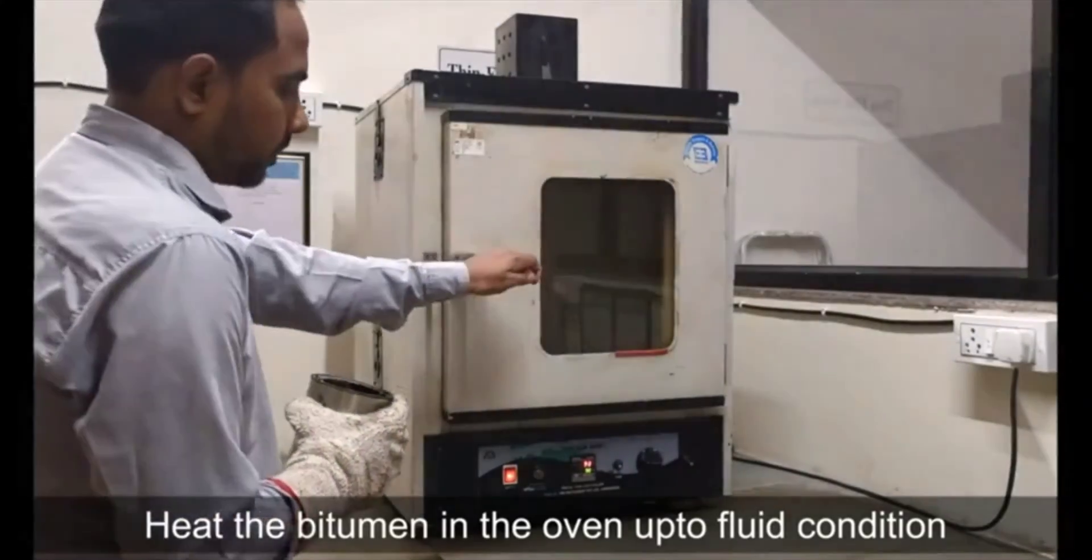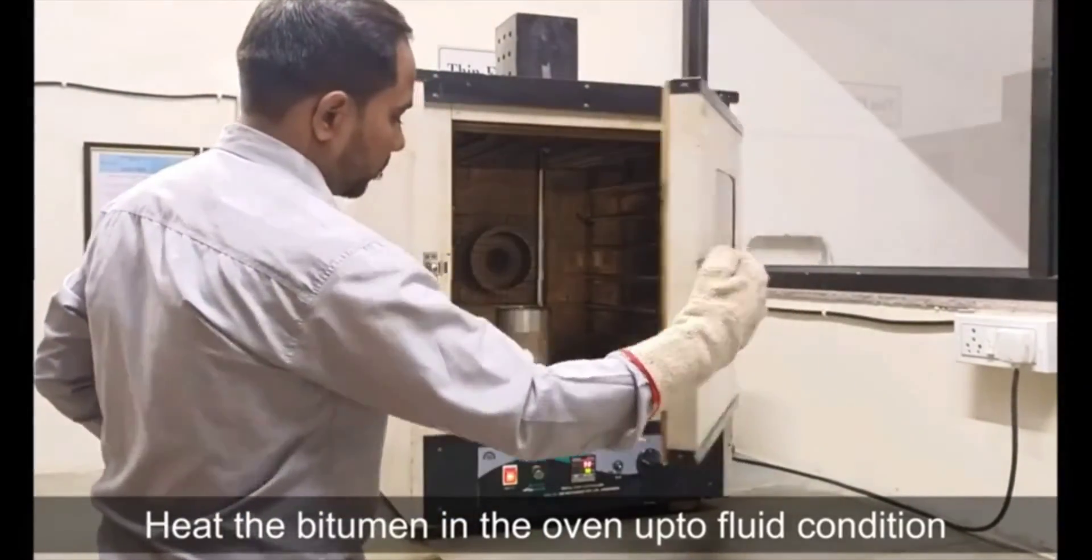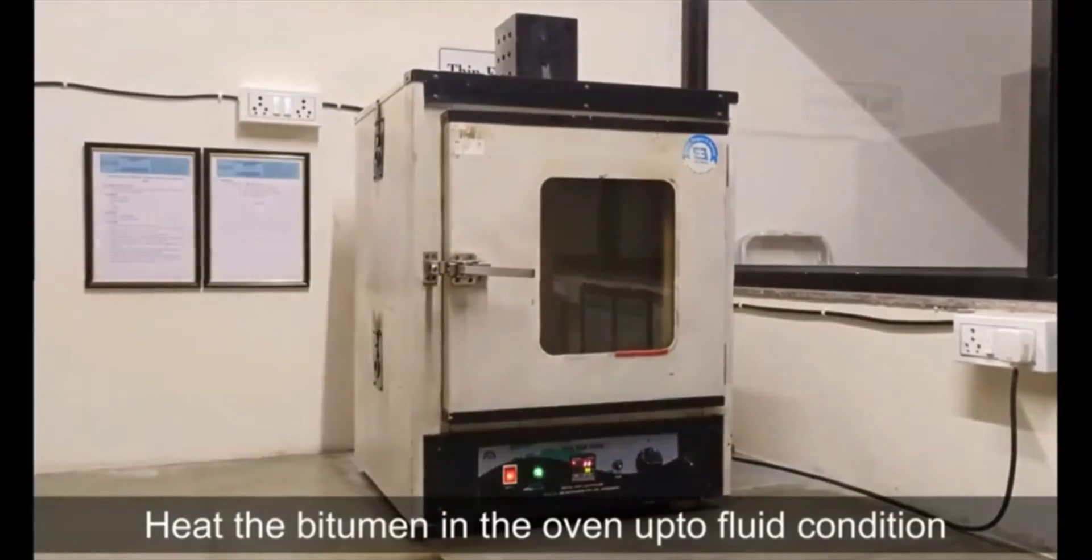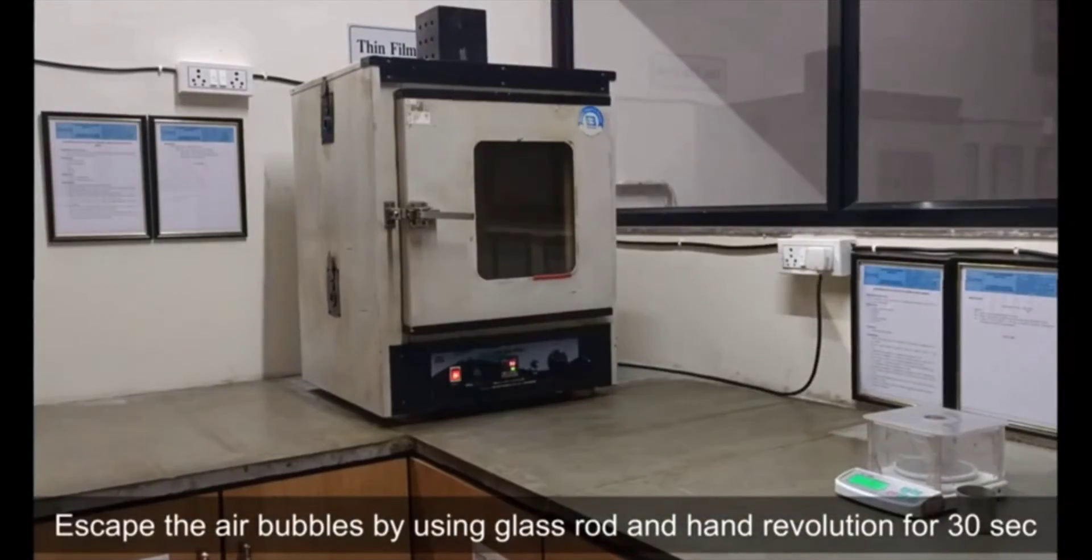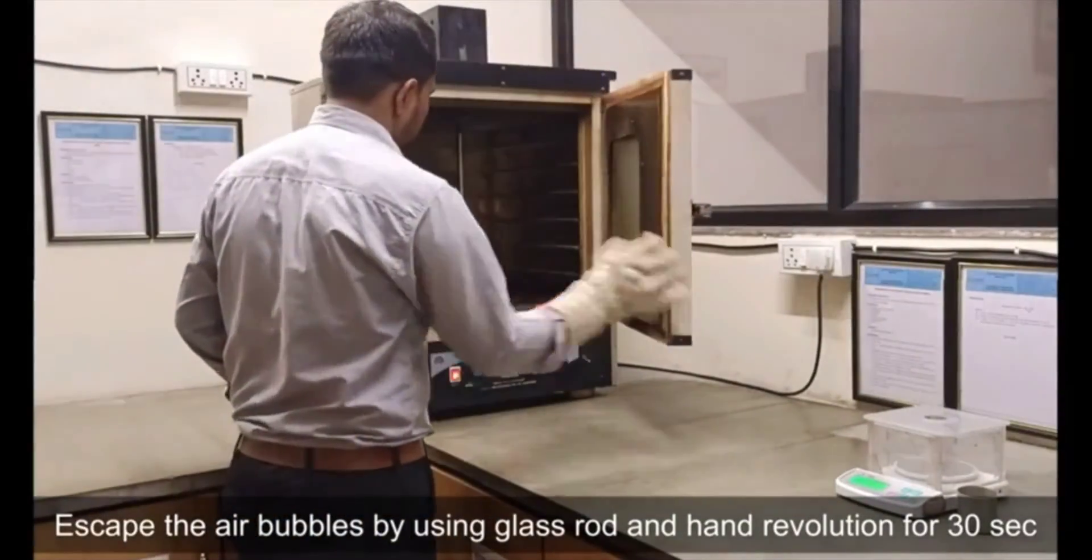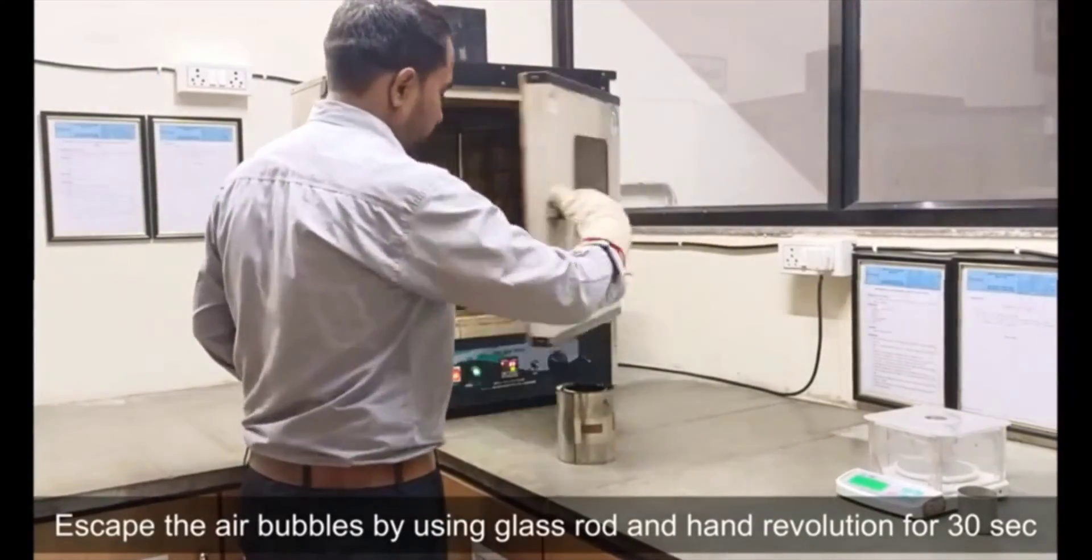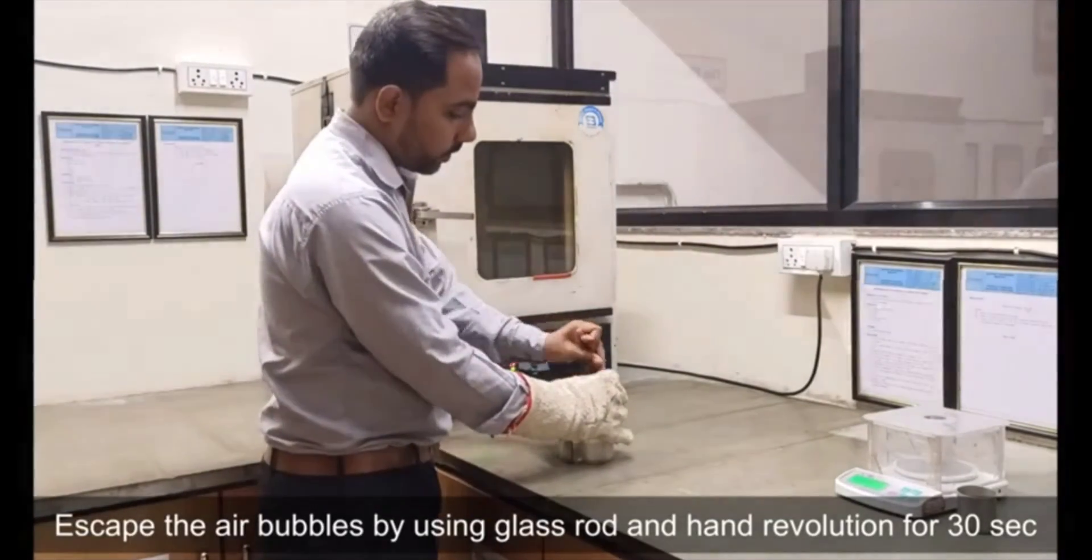Heat the bitumen in the oven up to fluid condition. Escape the air bubbles by using glass rod and hand revolution for 30 seconds.